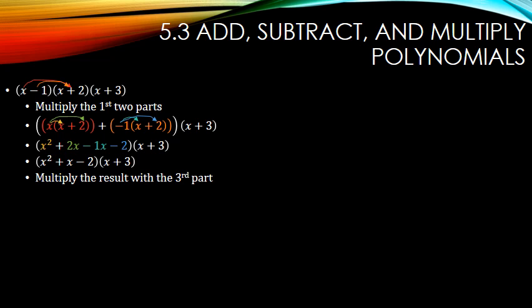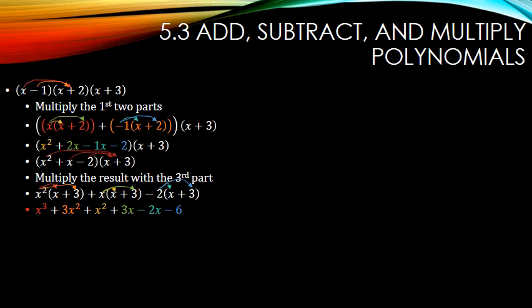Now I'm going to multiply that result with the third part, so each of those terms gets multiplied by the third part. So we have x-squared times (x plus 3), x times (x plus 3), and negative 2 times (x plus 3). Distribute in each of those groups: x-squared times x, x-squared times 3, x times x, x times 3, negative 2 times x, and negative 2 times 3. Combine like terms: 3x-squared and x-squared makes 4x-squared, and 3x minus 2x leaves x.